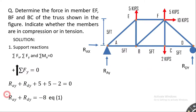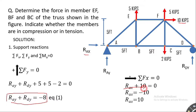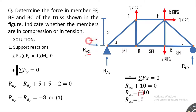Simplifying ΣFy gives RAy + RDy = −8, which we call Equation 1. Applying ΣFx = 0 with rightward positive: there are two forces in the x-direction — RAx and the 10-kip force — both acting to the right. Solving gives RAx = −10 kips. The negative sign indicates the assumed direction was wrong, so RAx is actually 10 kips acting to the left.